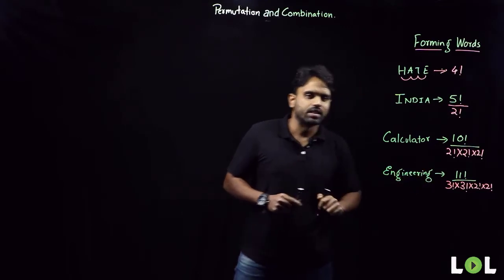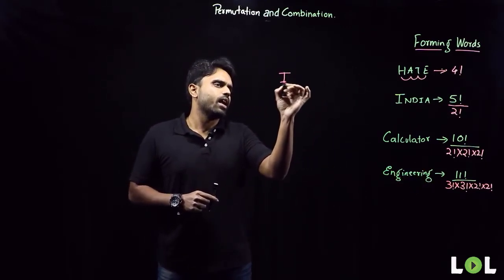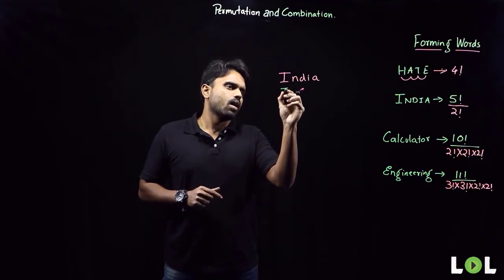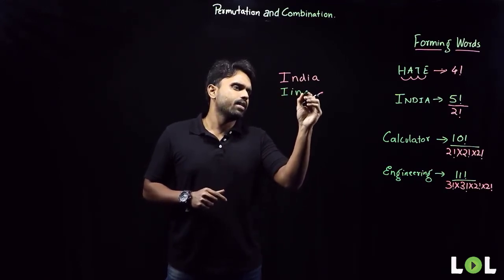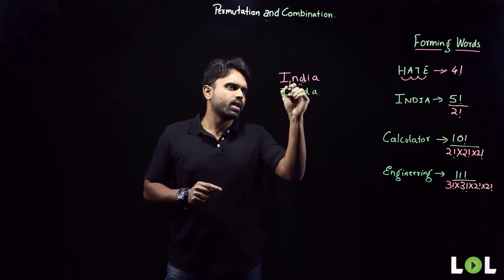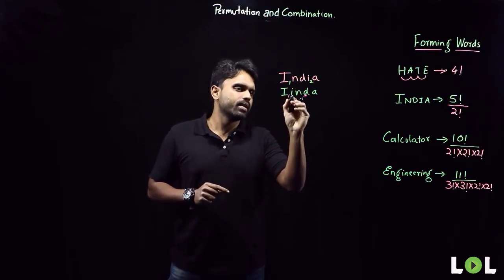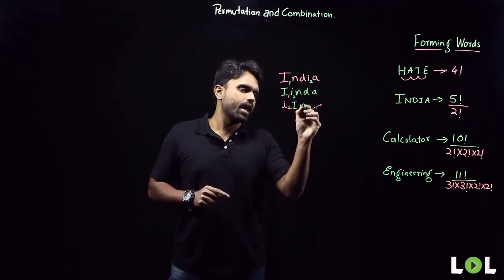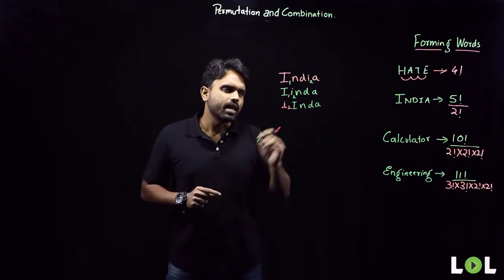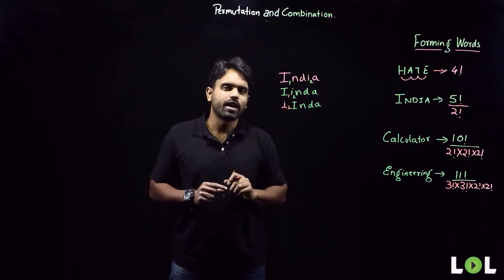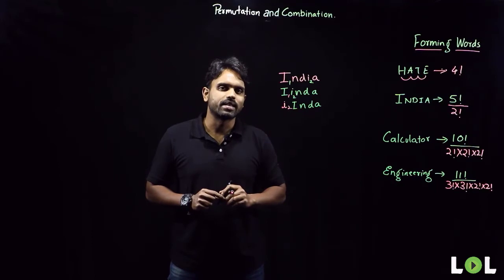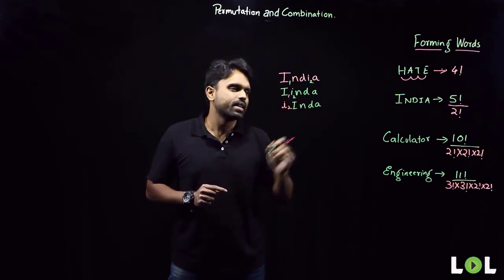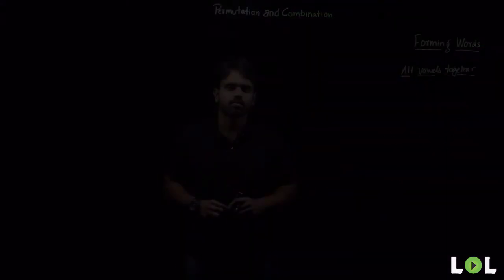To understand why we divide by the number of repetitions, take the word INDIA again. Rearranged as I₁, N, D, A — taking this I as I₁ and the other as I₂. Now if we swap them to get I₂, N, D, A — is there any difference between these two words? When you read them, they are the same. So to eliminate the repetition caused by treating the two I's as distinct, we divide by two factorial.